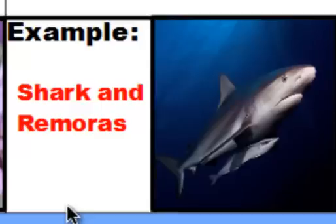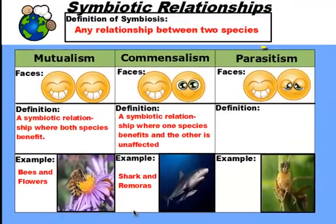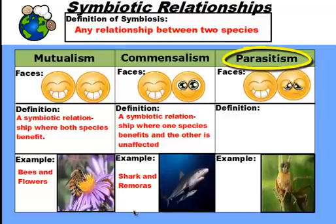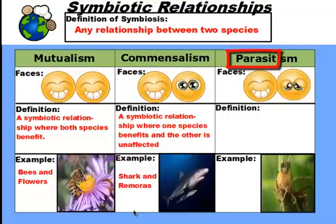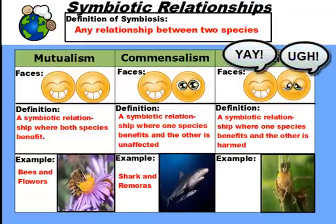And then lastly, we have parasitism. One easy way to remember what happens in parasitism is the fact that most of the word parasite is in this word. And as we know, parasites aren't very good. So by definition, parasitism is a symbiotic relationship where one species benefits and the other one is harmed.